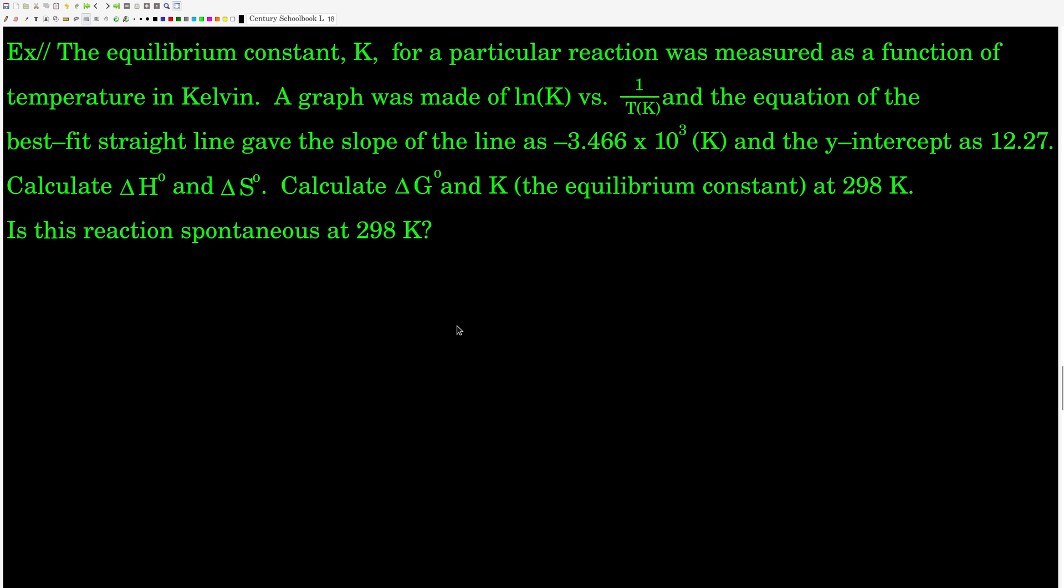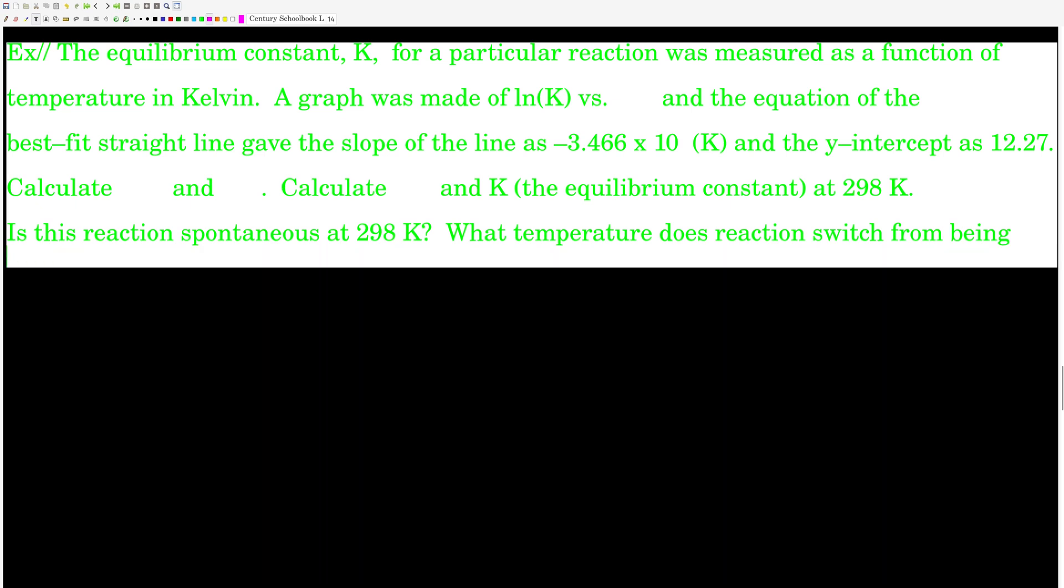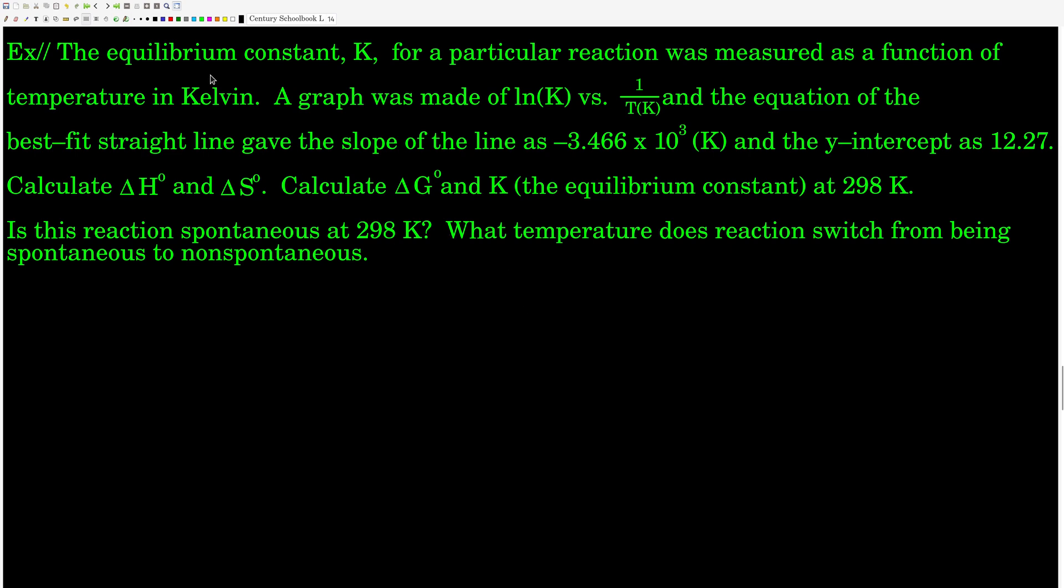We want to calculate ΔH°, ΔS°, ΔG°, the equilibrium constant K at 298 Kelvin. And we want to answer the question, is this reaction spontaneous at 298 Kelvin? And while we're at it, we can answer another question: what temperature does this reaction switch from being spontaneous to not spontaneous? So there's a lot of stuff we can do with this equation here. So why don't you guys go ahead and work it out, do your best, and pause the video while you do that, and come on back when you're finished.